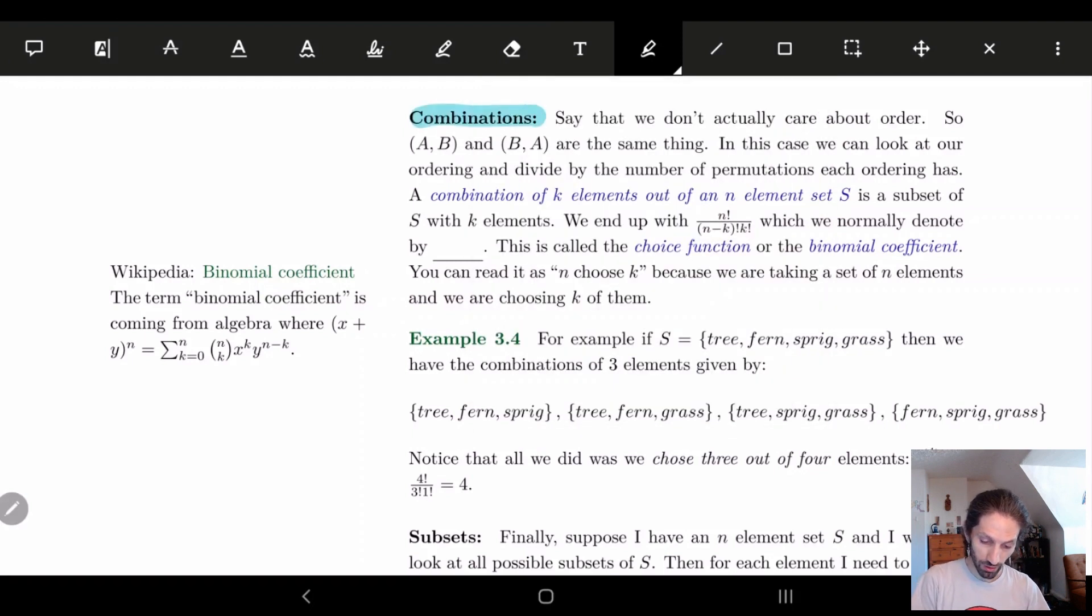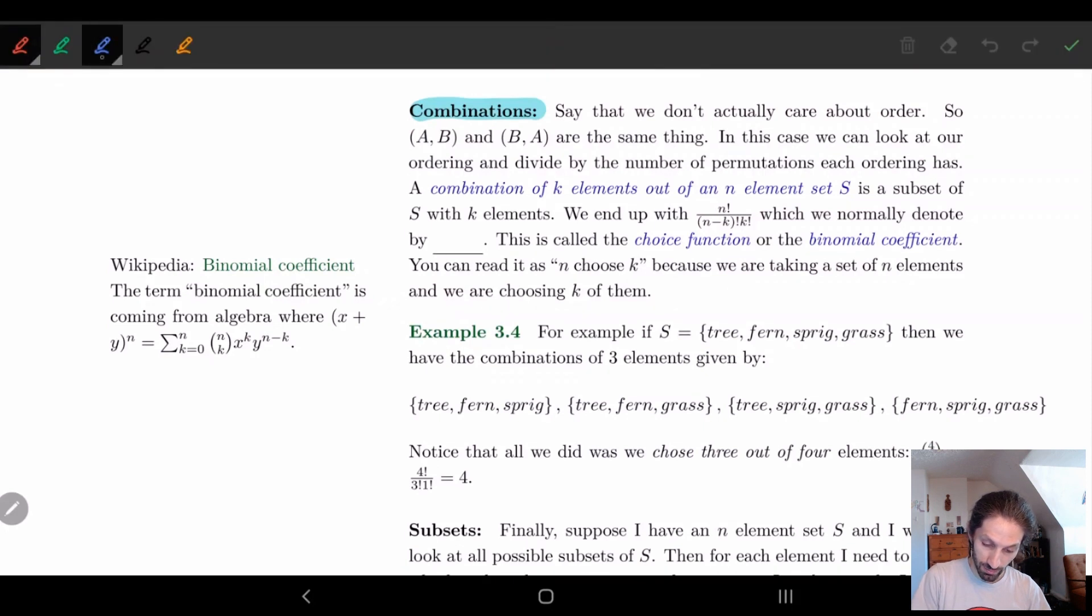So basically here we're not caring about the order. We're saying A, B and B, A are the same thing. So basically a combination of k elements out of an n element set. So what we're doing is we're gonna look at all possible orderings. We have k elements so I'll take an ordering of k elements of n elements and then what I want to do is for each of these elements I want to make all the permutations all the reshufflings be equivalent.